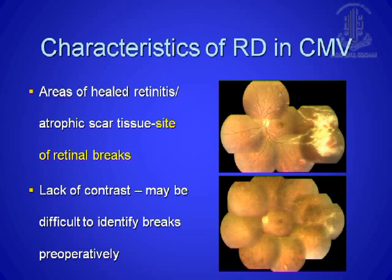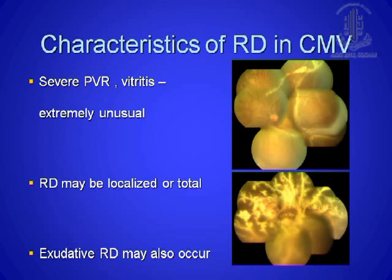It is difficult to identify the breaks because once the areas of involved retina heal up, there is a lack of contrast — very difficult to see a break preoperatively. There is hardly any vitreous and no PVR. The RD may be localised or total, and sometimes you have an exudative RD. So it's a little difficult — you have ongoing inflammation which has been treated, and a residual RD where you don't know whether it's exudative or tractional.